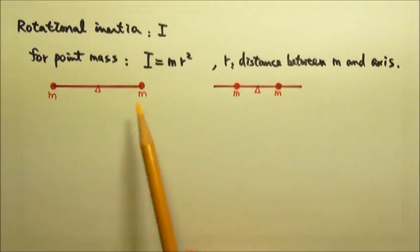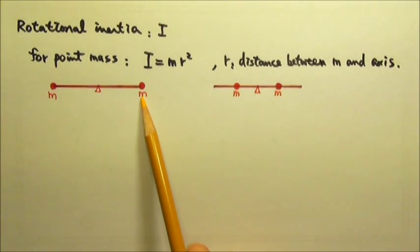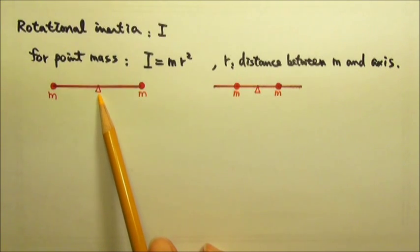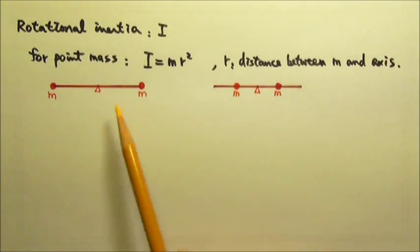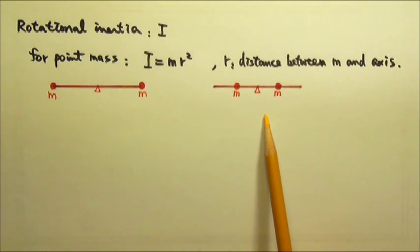For example, here are two identical sticks, each with two identical mass m's attached to it. For a rotational axis perpendicular to the page at the center of the stick, which combination has a larger rotational inertia?